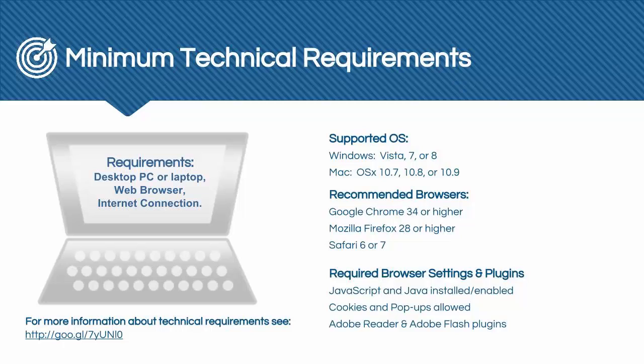Minimum technical requirements for using Blackboard: faculty and students must have access to a Windows or Mac computer with a supported web browser to access Blackboard. Supported web browsers include the most recent releases of Mozilla Firefox and Google Chrome. It is usually a good idea to have two supported web browsers installed on your computer. In the event that there is a problem with one browser, you may use the alternative browser. Also, please make sure that your web browser has JavaScript enabled, pop-ups allowed from Blackboard, and the necessary software plugins or extensions to view instructional content online.